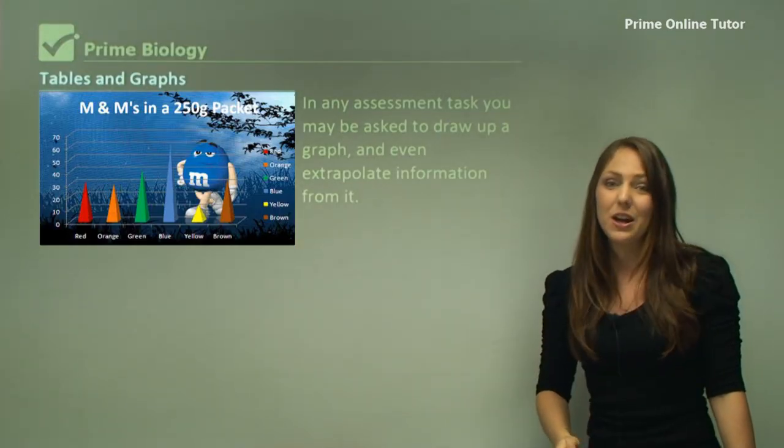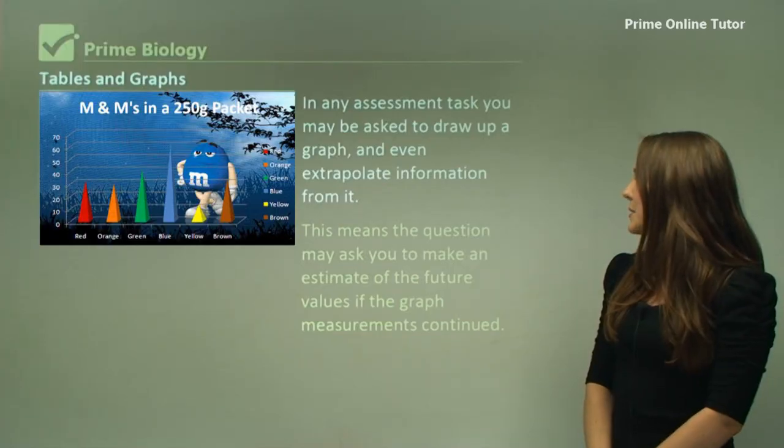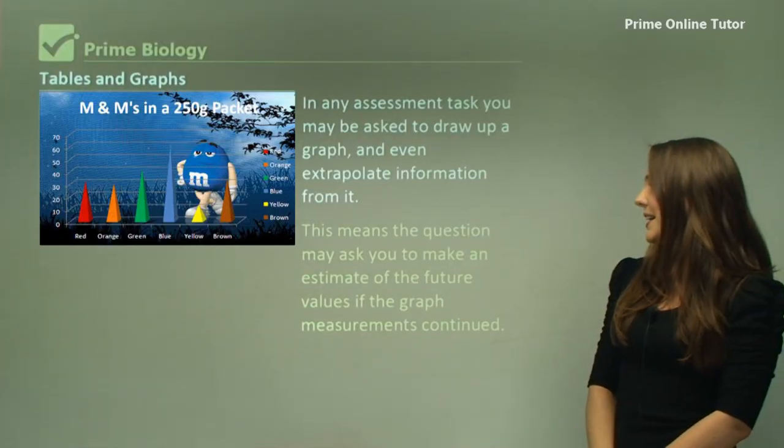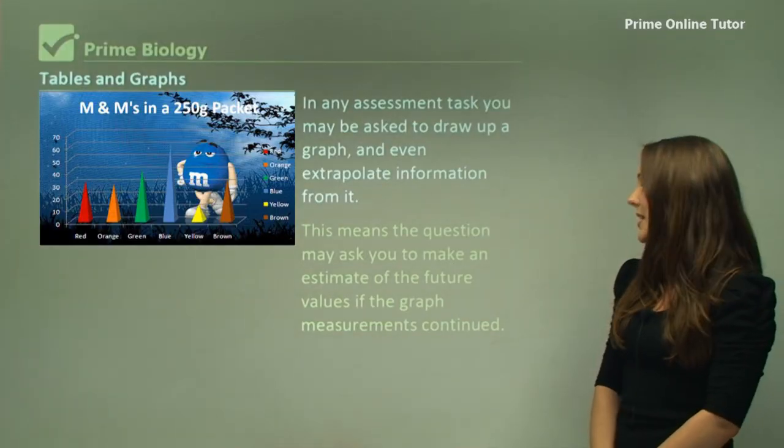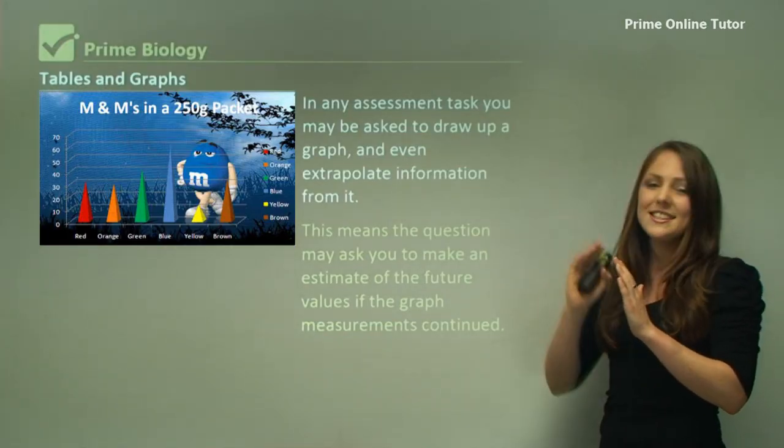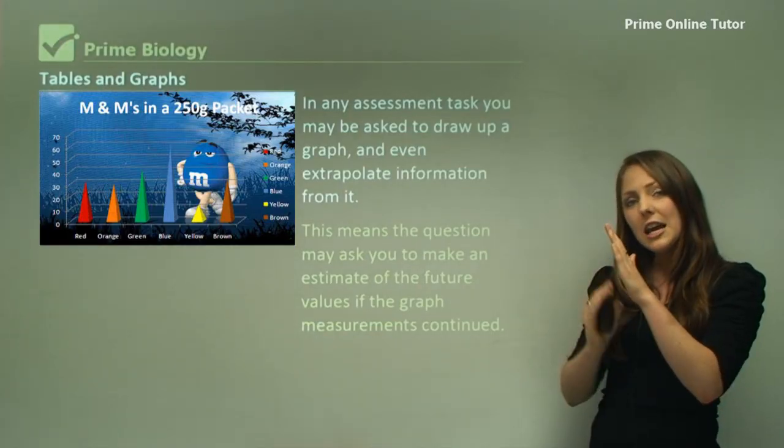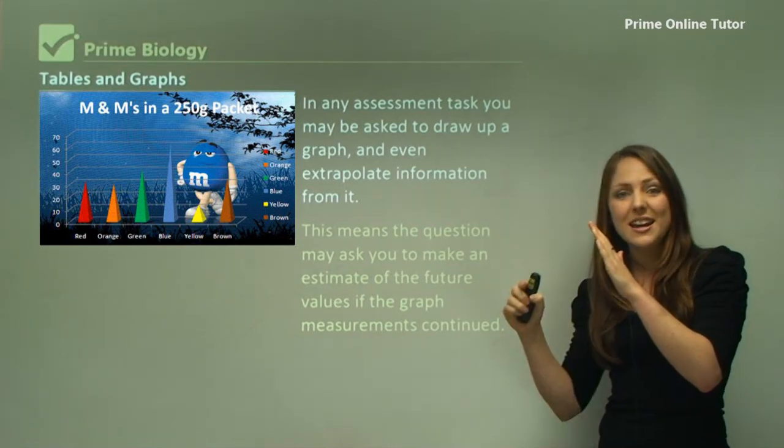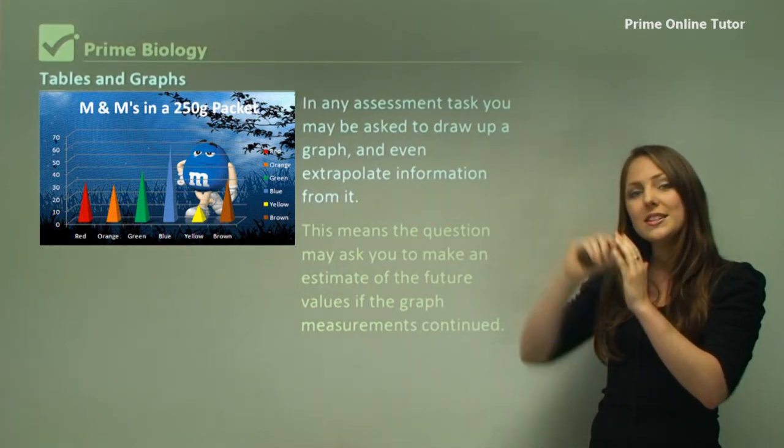The question may ask you to make an estimate of future values if the graph measurements continue. So if the graph starts to incline and asks what will happen next year, if it's inclining you're not going to say it decreases, you're actually going to keep with that trend.